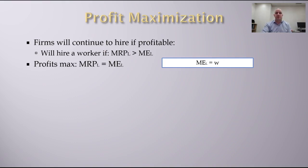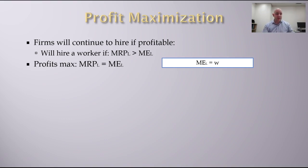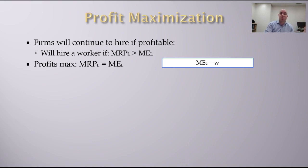In general, firms will continue to hire if it's profitable to do so. They'll hire a worker if the marginal revenue product of labor — the additional revenue from hiring an additional worker — is greater than the marginal expense of labor, which is the additional cost of employing an additional unit. Profits are maximized where the two are equal to each other.